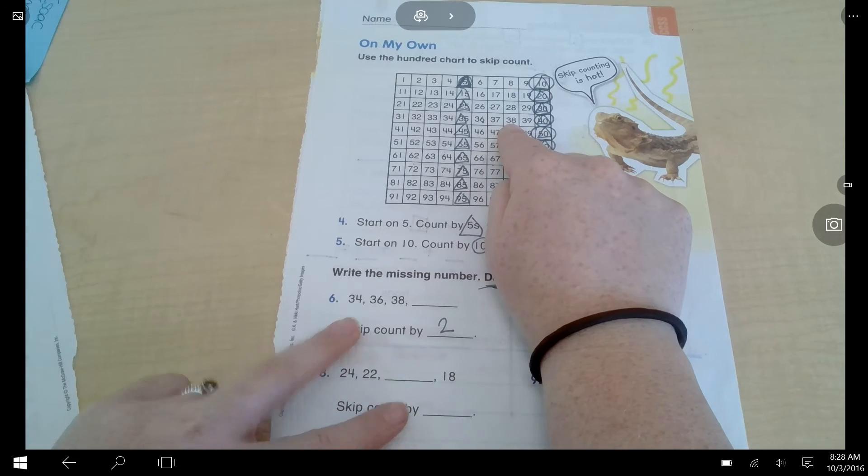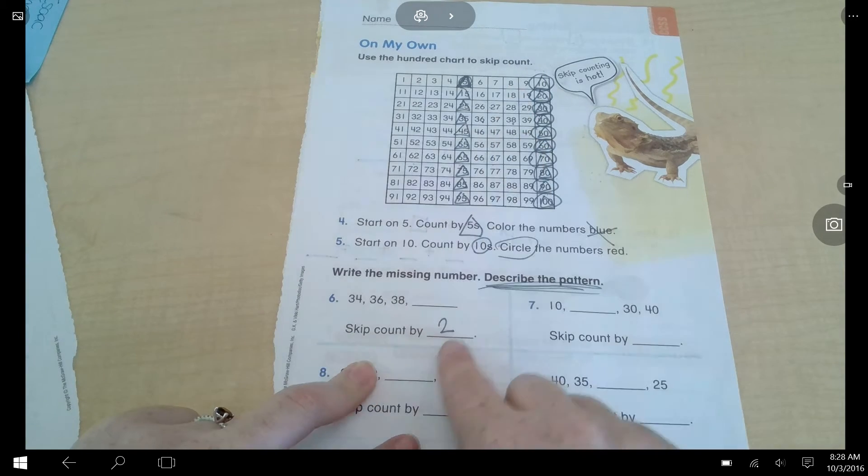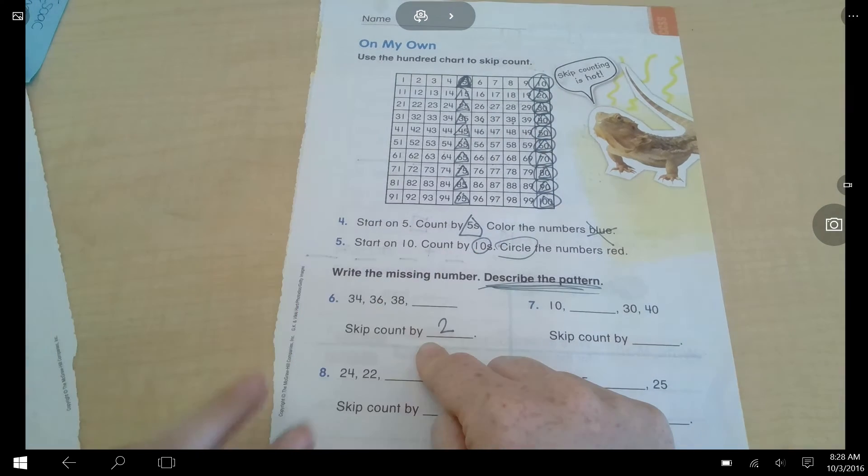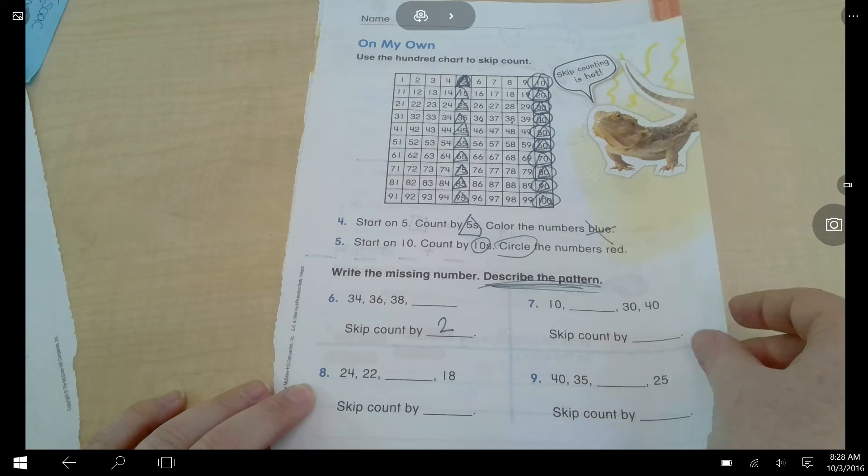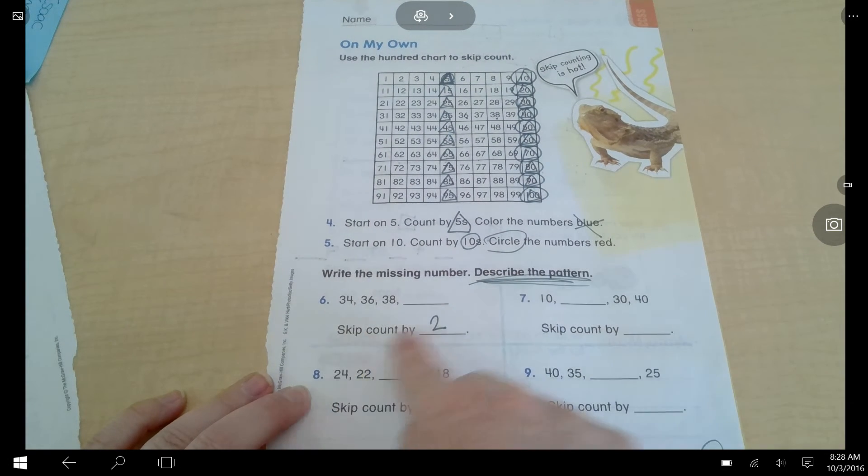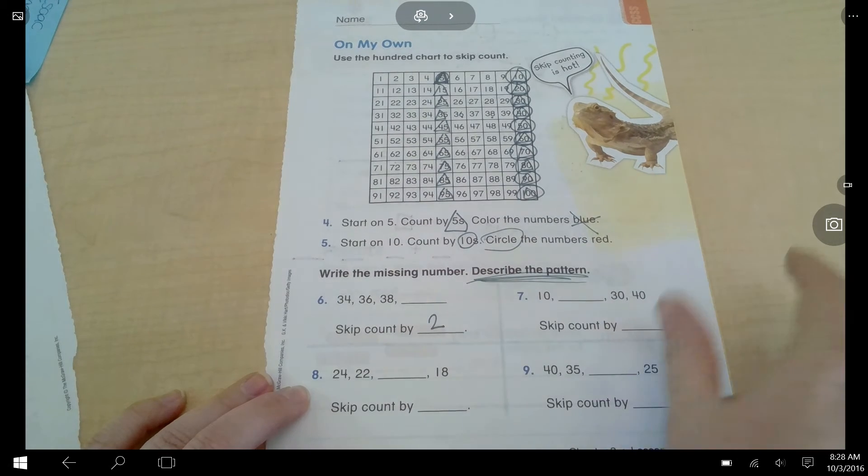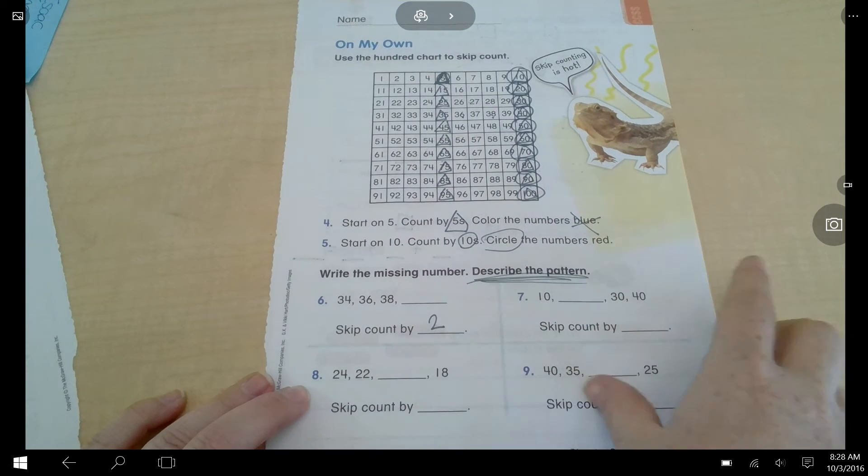I only counted two times. Then I'm going to skip count again. 1, 2. I only counted two times to get to 38. So, I'm skip counting by two times. All right. So, that's what it means when it says, describe the pattern. How many times are you skip counting? Do 7, 8, 9 on your own.